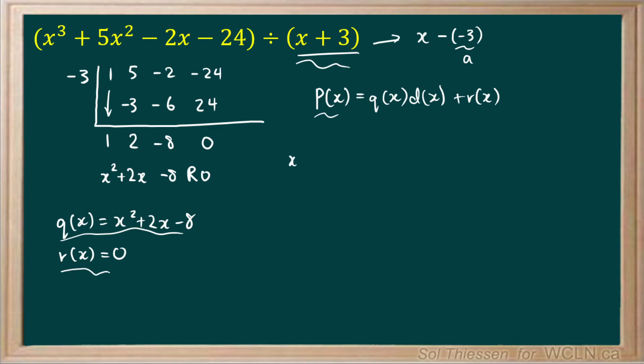So we can write that x cubed plus 5x squared minus 2x minus 24 is equal to x squared plus 2x minus 8, and that entire thing is being multiplied by the divisor x plus 3, and then we're going to add our remainder, but our remainder is just 0, so we actually don't have to write anything. So this is the division statement for this problem.